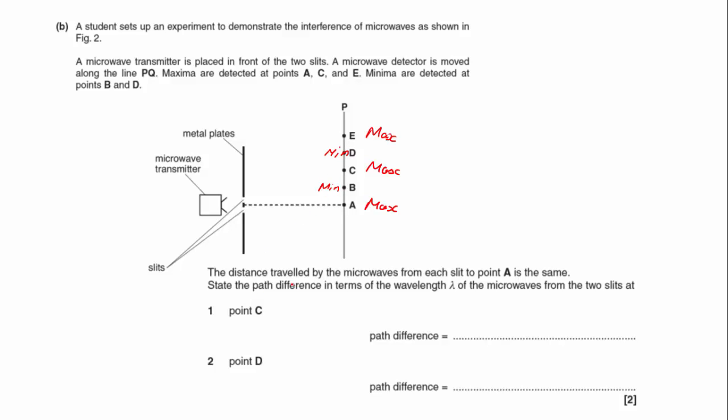The distance travelled by the microwaves from each slit to point A is the same. State the path difference in terms of the wavelength lambda of the microwaves from the two slits at point C. C is the first maxima, so that will be a path difference of one wavelength.